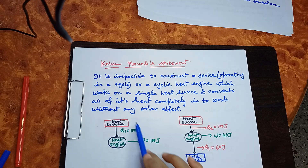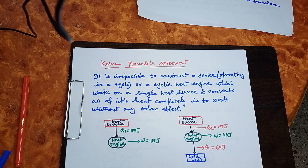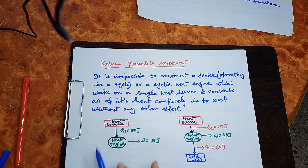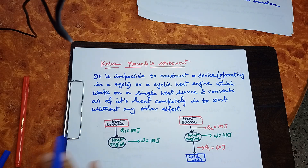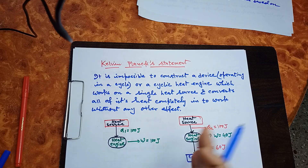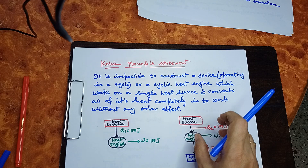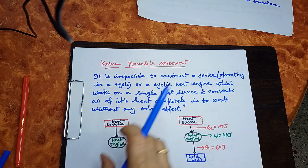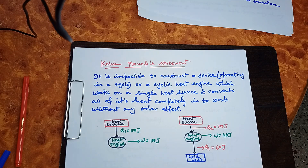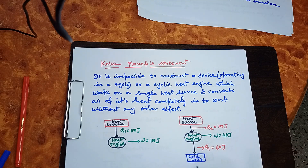According to the First Law of Thermodynamics, a heat engine converting heat entirely into mechanical work is possible, but as per the Kelvin-Planck statement of the Second Law, it is not possible in a cyclic process. If heat is not released to a low temperature reservoir, a part of it increases the entropy or randomness of the system.